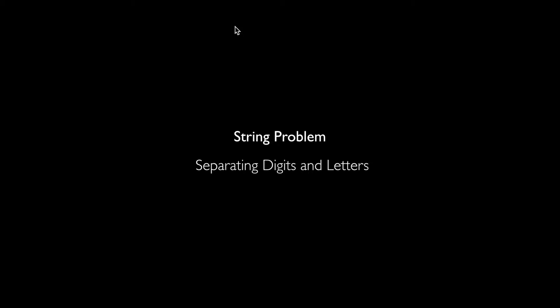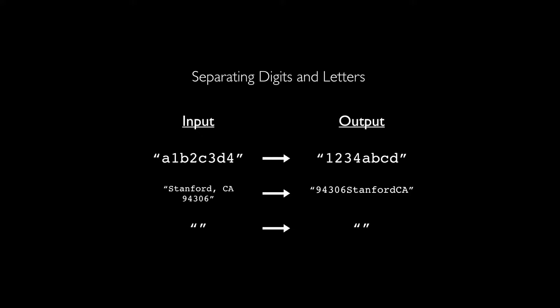The problem we're looking at is a string problem. The premise is separating digits and letters in a string. The function should take in a string of inputs — which could be any set of characters in any order — and output all of the numbers in their original order at the front of the string, then all of the letters in their original order at the end. Any character that isn't a digit or a letter we'll just ignore.